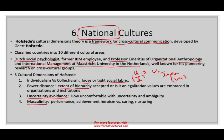The fourth dimension is masculinity — and this doesn't mean man versus woman. It's about whether you value performance, achievement, heroism versus caring and nurturing. It's a preference for achievement, heroism, assertiveness, and material reward for success. In the U.S., we are a largely masculine society. The alternative is to prefer cooperation, modesty, caring for the weak, and quality of life — which Japan values more. In the U.S., quality of life is more of a byproduct, not the main focus.